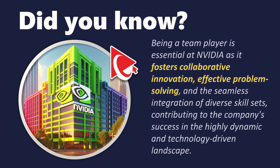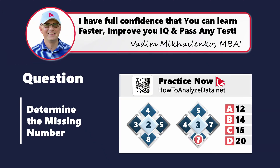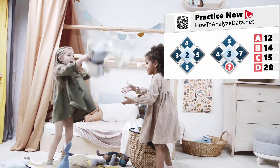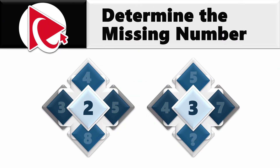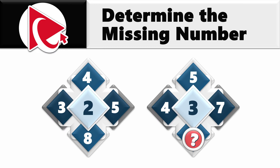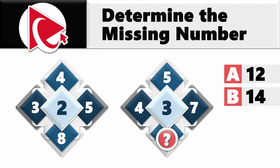Untangling this next question is like explaining a messy room to a toddler — you might need to use simple terms and point a lot, but eventually it should click. You're presented with two diamonds that have numbers inside. In the first diamond, the middle number is 2, and starting from 9 o'clock, the numbers are 3, 4, 5, and 8. In the second diamond, the middle number is 3, and starting from 9 o'clock, the numbers are 4, 5, 7, and then the missing number. Choices are A: 12, B: 14, C: 15, and D: 20.